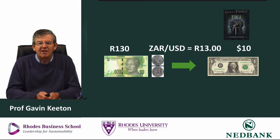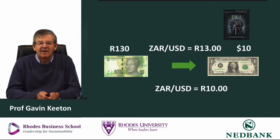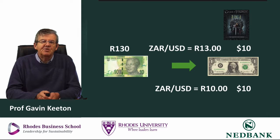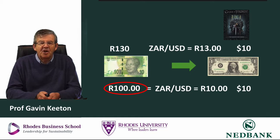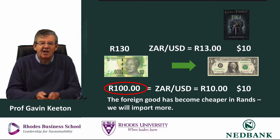We're now paying 10 rand for one dollar. The DVD still costs 10 dollars, but the exchange rate is now 10, not 13. For every one of those 10 dollars we must now pay 10 rand instead of 13 rand. So for 100 rand we can get the 10 dollars required to buy the DVD. The price we pay in rands is no longer 130 rand — it's 100 rand. The cost of importing foreign goods has fallen for us in rand terms. The dollar price never changed; it's the exchange rate that changed the rand price. So we will import more foreign goods because they're cheaper for us in rands.